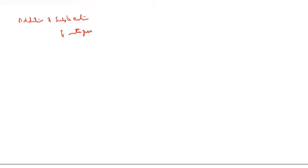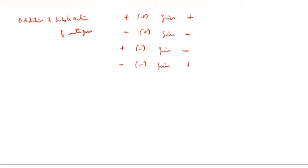We will see addition and subtraction of integers. The rules are: positive plus positive gives positive. Negative plus positive gives negative. Negative plus positive gives negative. Negative plus negative gives positive.